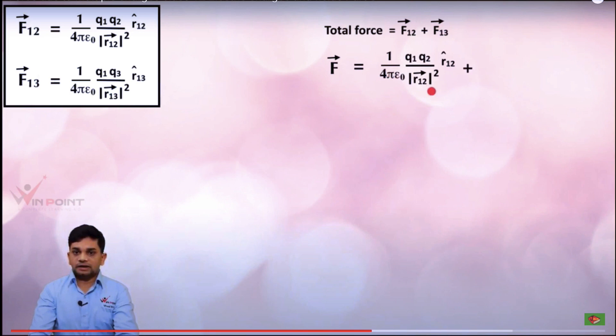So we can write that plus 1 by 4 pi epsilon 0 q1 q3 by vector r13 square into unit vector r13.